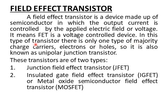In this type of transistor, there is only one type of majority charge carriers — electrons or holes. It is also known as Unipolar Junction Transistor.